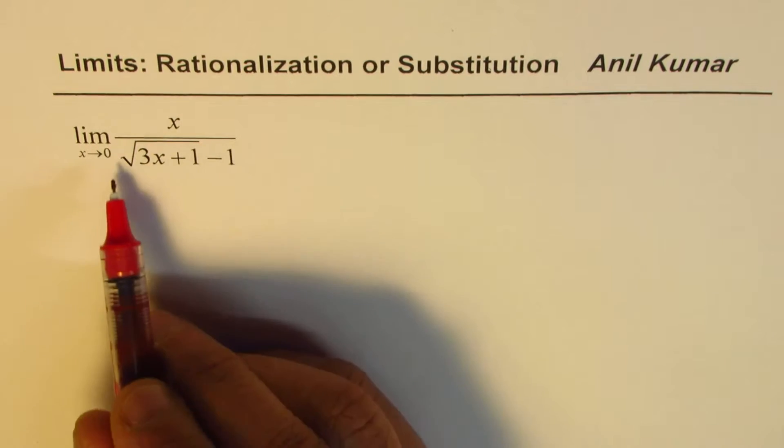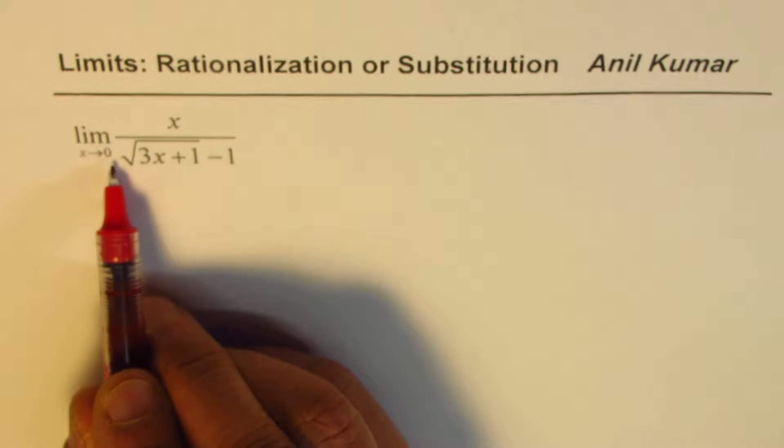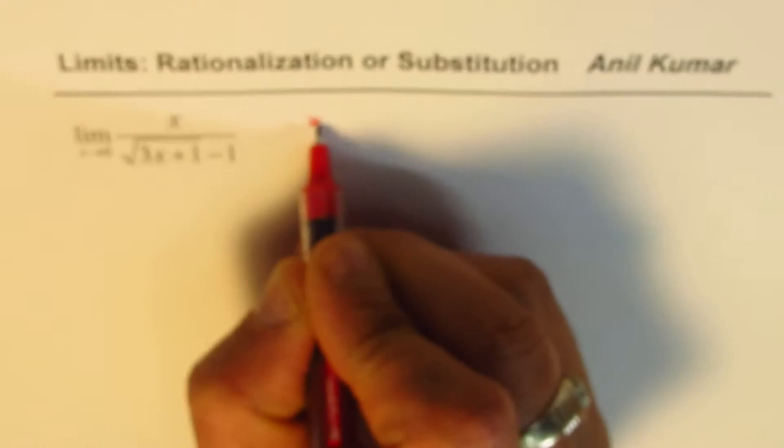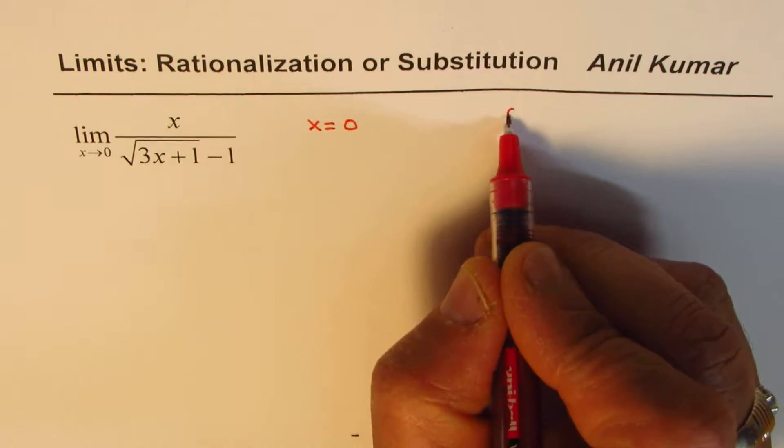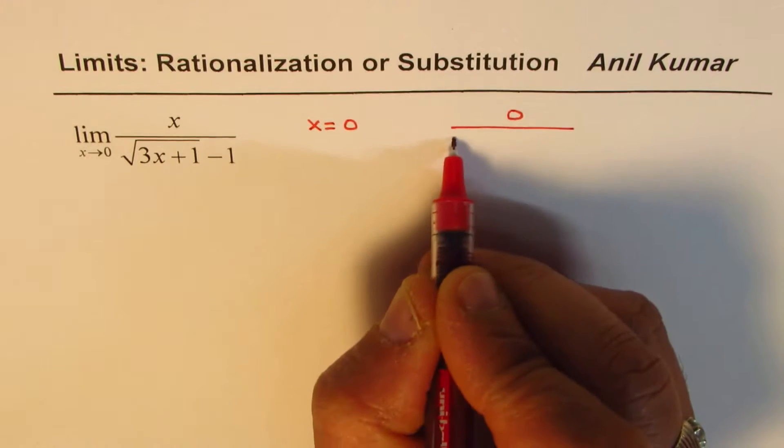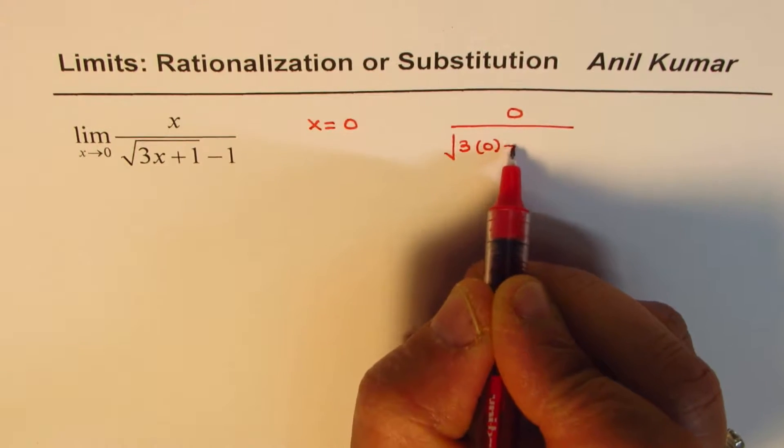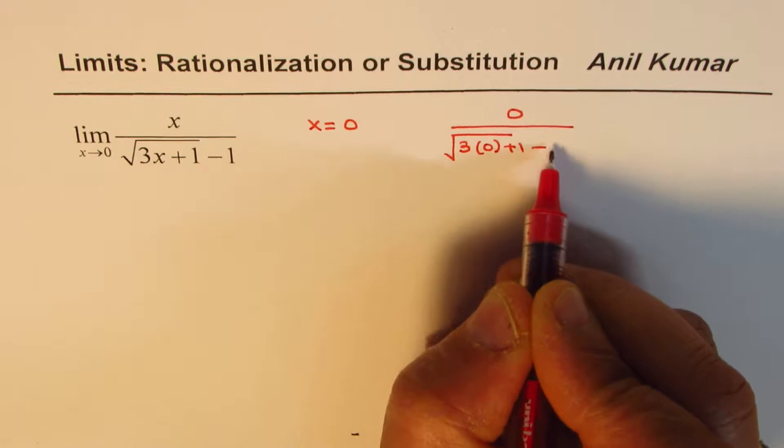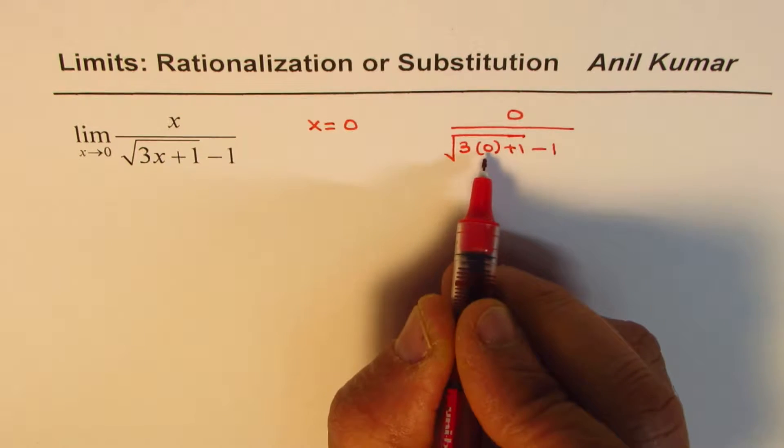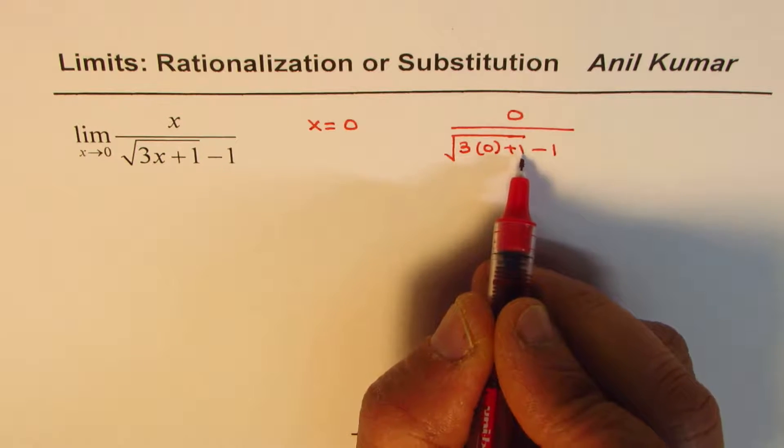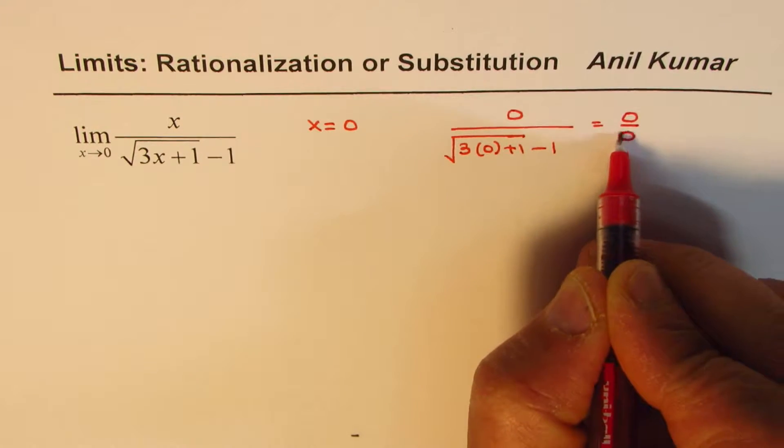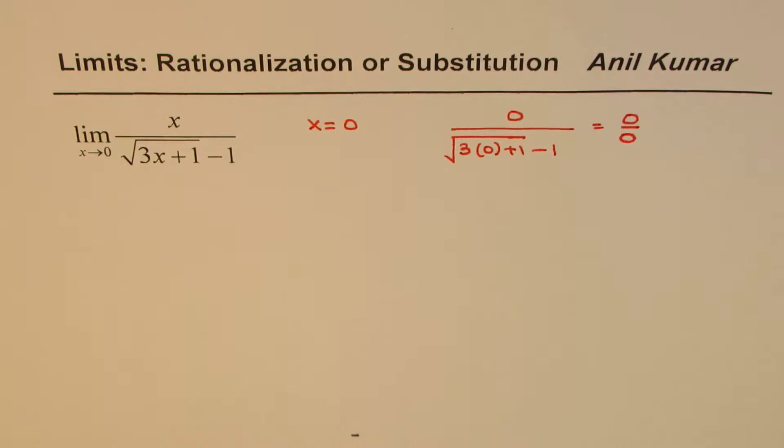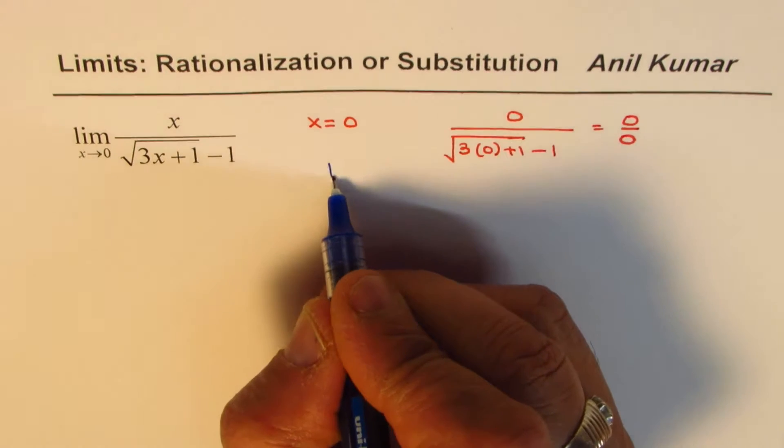First step should be just substitute x equals to whatever you are approaching. You are approaching 0, so let's write x equals to 0 in the expression and see what we get. So we get 0 over square root of 3 times 0 plus 1 minus 1. 3 times 0 is 0 plus 1, square root of 1 is 1, 1 minus 1 is 0. So we get 0 over 0.